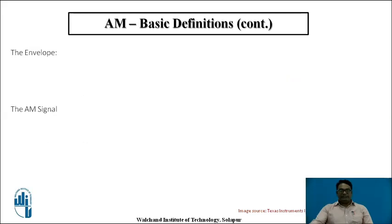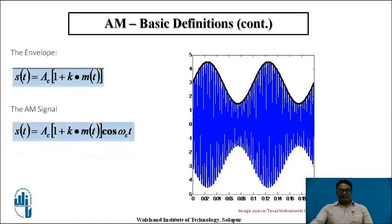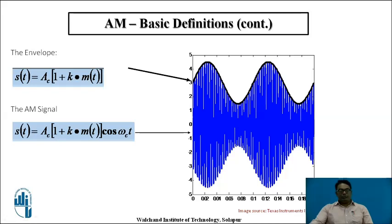Next, we are going to see what the envelope is and how the AM signal is represented. The envelope is the part given by AC(1 + KM), which represents the Vmax of the AM modulated signal. This equation generally represents the two sidebands of the AM modulated signal, and the total AM signal is given by the equation seen in the previous slide.